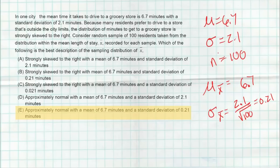An individual could vary by as much as 2.1 minutes, but a sample of 100 should not vary as much, which is why it has a much smaller standard deviation of 0.21. Finally, for shape: because our sample size is greater than or equal to 30, the Central Limit Theorem says the sampling distribution of x-bar will be approximately normal. So that's why the correct answer is E.